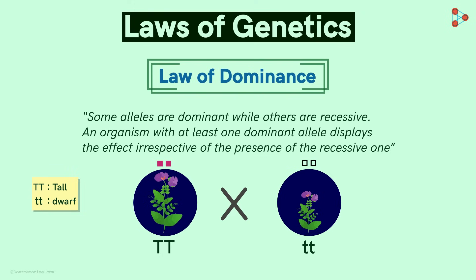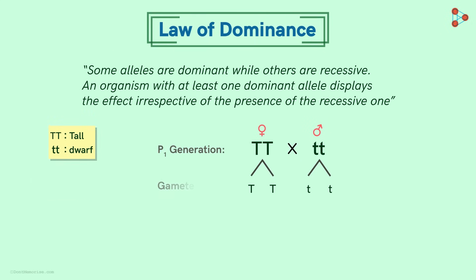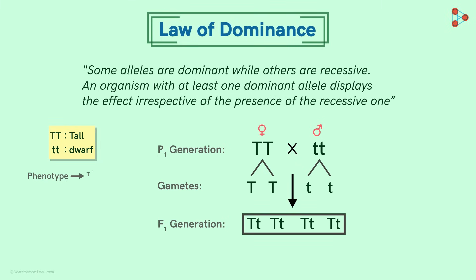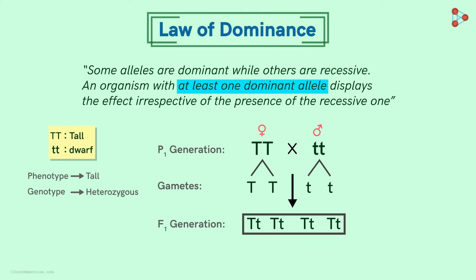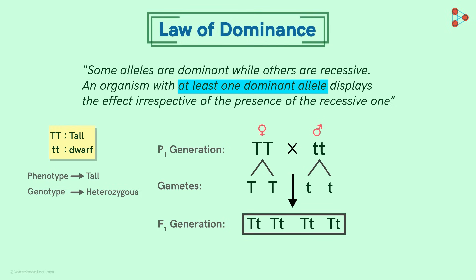On crossing the two, we get plants in the F1 generation whose phenotype is all tall. Their genotype is heterozygous — one dominant and one recessive allele. The tall phenotype clearly indicates that the dominant allele has masked the presence of the recessive one. The presence of a single dominant allele is enough to express the trait phenotypically. The law states at least one dominant allele, meaning if one or both alleles are dominant, we get the respective dominant phenotype.